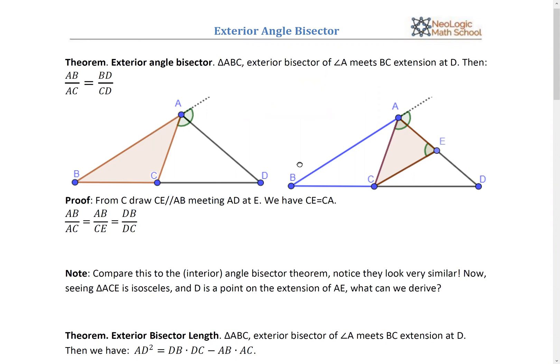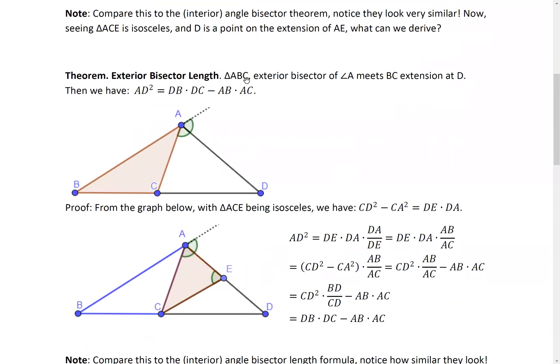And I'll show you the proof. So the result is, for exterior bisector, AD square should equal to BD times CD, subtract AB times AC. All right? It's kind of the opposite of the interior bisector's length formula. If you remember one, you should be able to remember the other one, right? They're kind of like cousins, right? They're like a pair of conjugates. Very similar theorems.